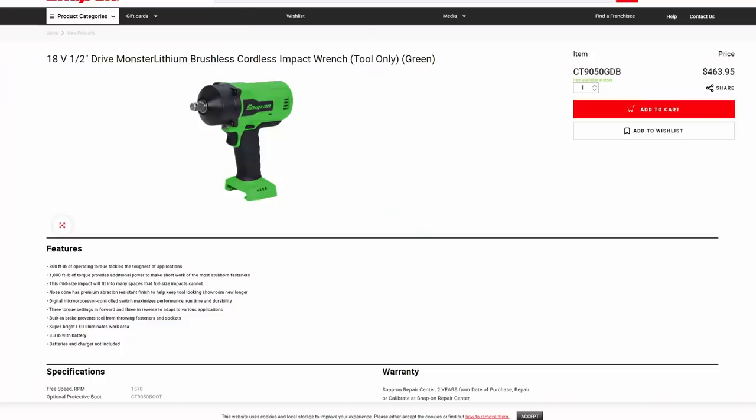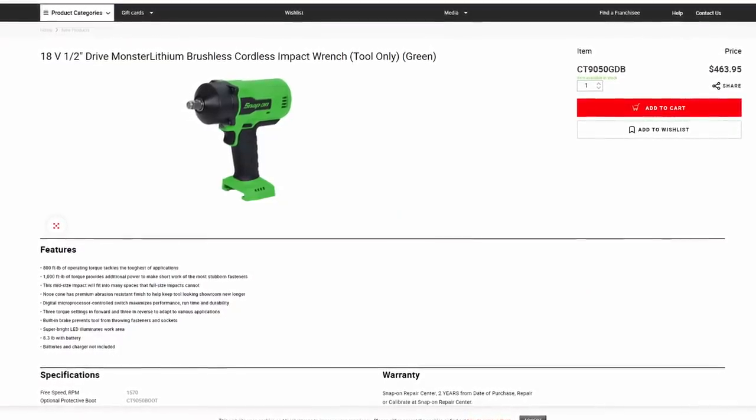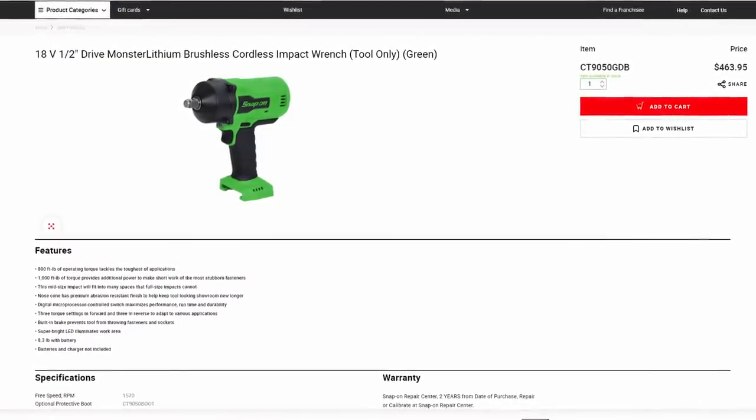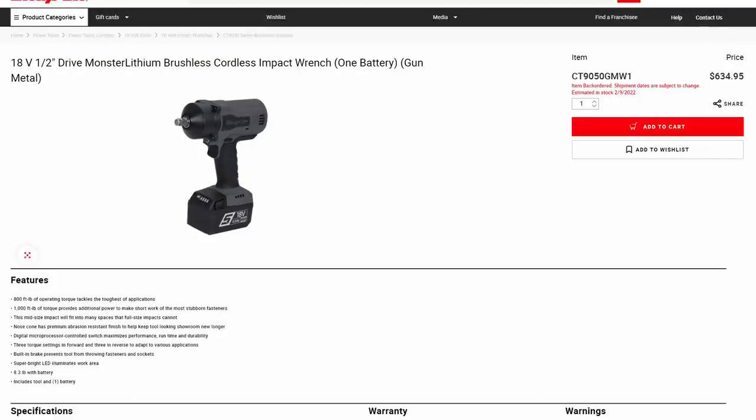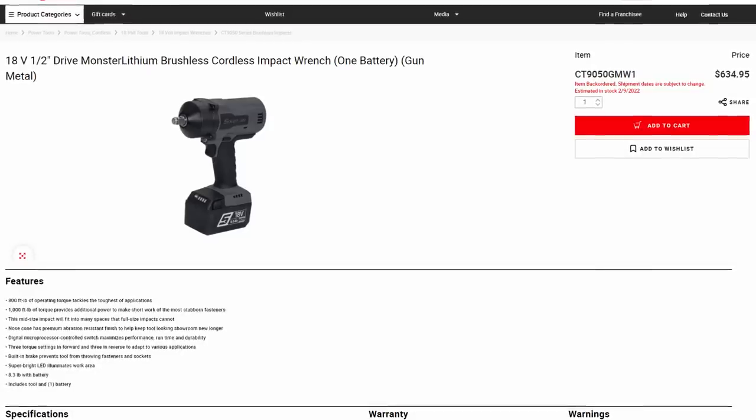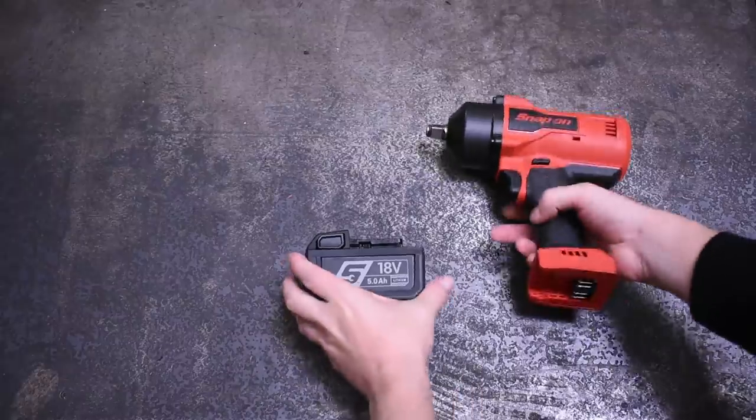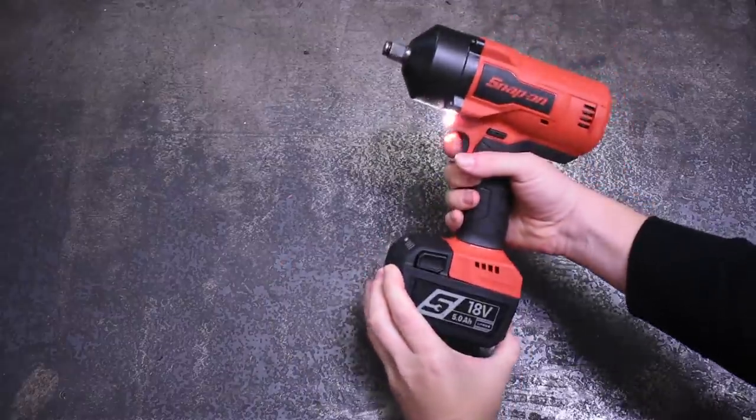One thing's for sure, there is some coin to be saved going this route. I mean, it's Snap-on and some USA made parts after all, so not exactly bargain prices we're talking about here, but $464 bare and $635 as a kit, which is between 100 and 350 bucks in savings versus going the 9080 route.